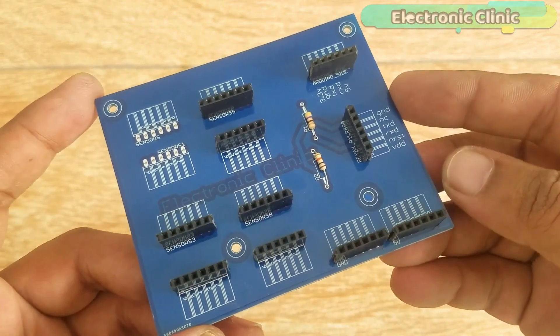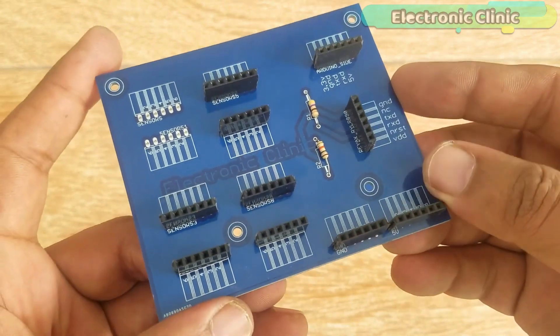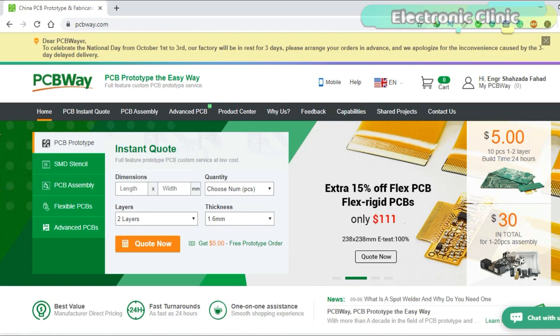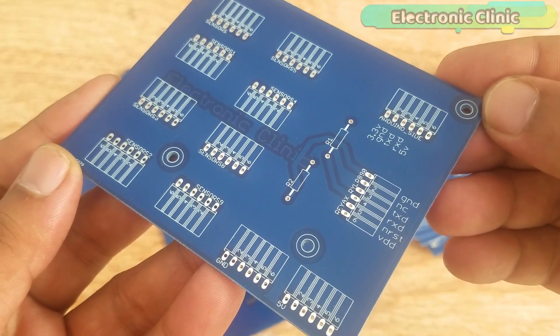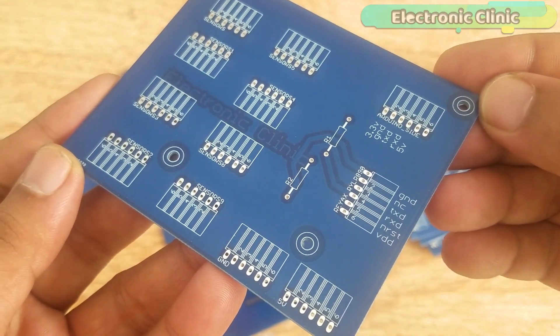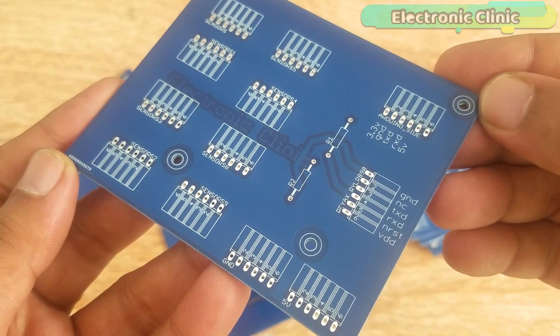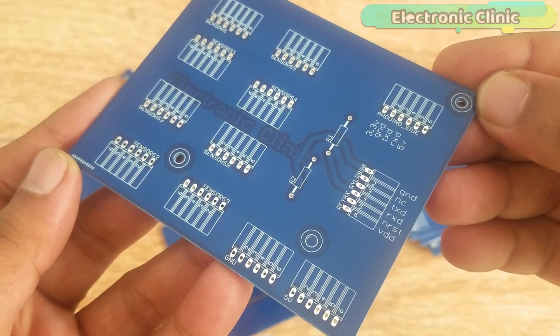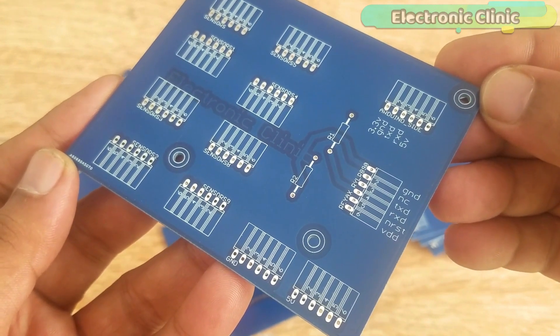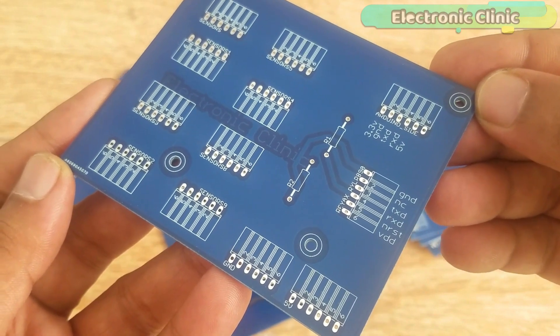The PCB board used in this project is sponsored by the PCBWay company, which is one of the most experienced PCB and PCB assembly manufacturers. They create high quality PCBs with reasonable prices. The Gerber files of the PCB board used in this project can be downloaded from the PCBWay official website. You can find the link in the description.